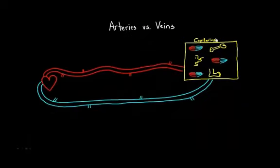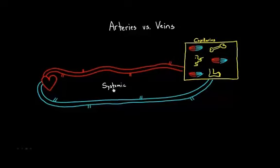We've kind of lumped it together, and what I want to show you now is that this, very simply, is the systemic circulation. Now of course you know that there's also the pulmonary circulation. So what does that look like? Let me draw that out here — pulmonary circulation.